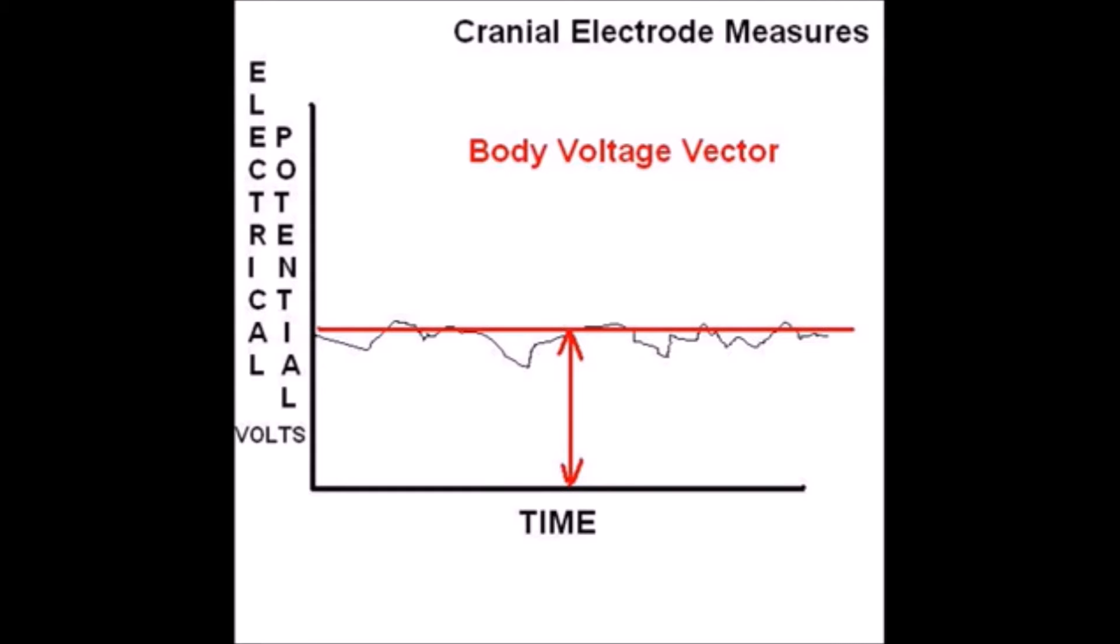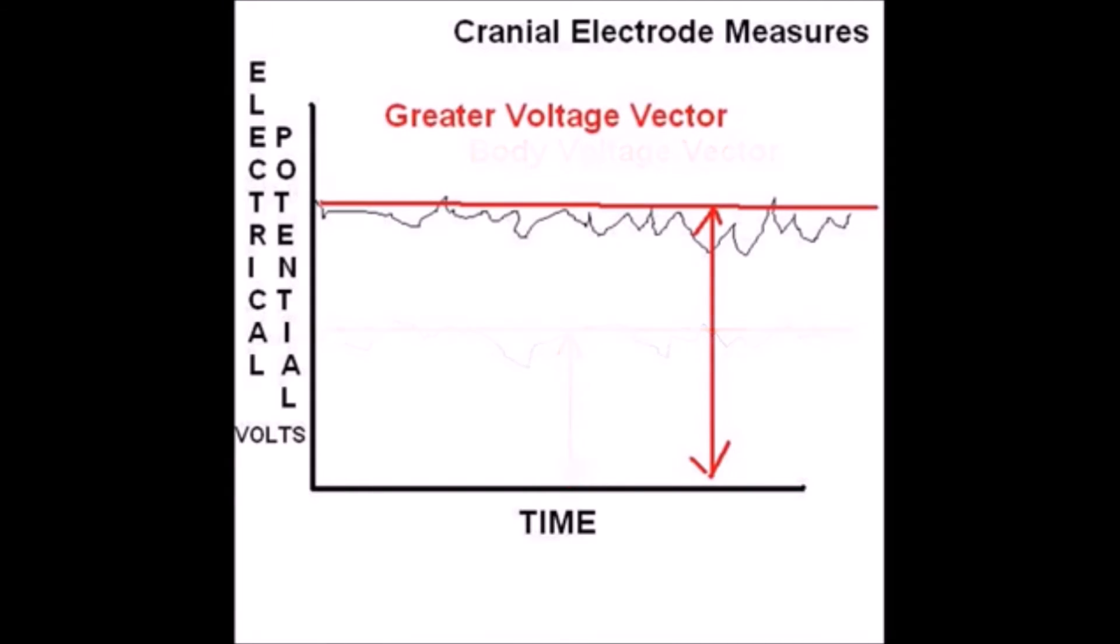This has to do with their body's ability to handle electricity. So the baseline factors of the cranial measures will give us an idea of the voltage vector, which here corresponds to the X thing of the electro potential.